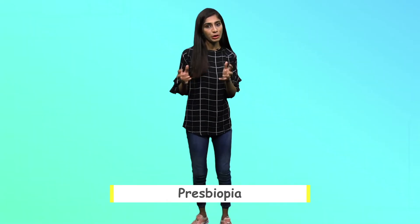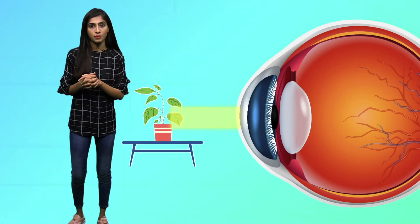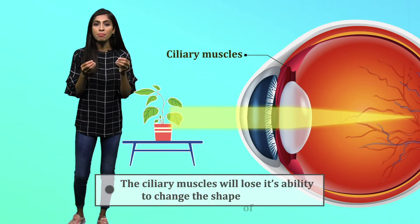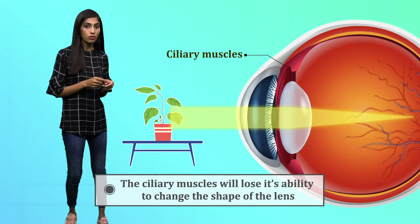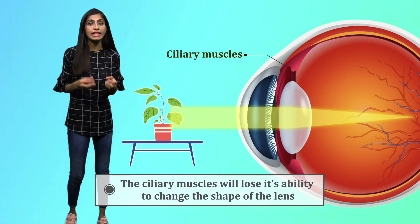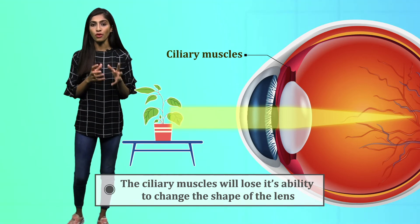The other refractive defect is called presbyopia. This presbyopia is a defect which may arise after 30 or 40 years. Here the ciliary muscles will lose their ability to change the shape of the lens that we have. Thereby they lose the capacity to change the focal length of this lens.